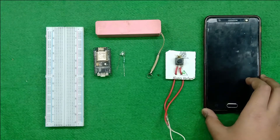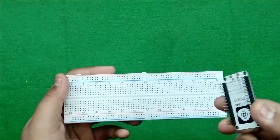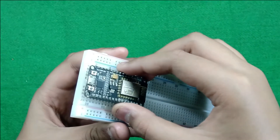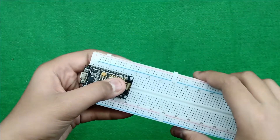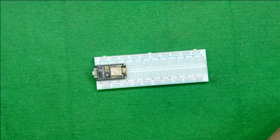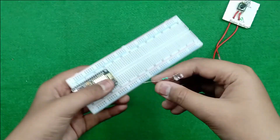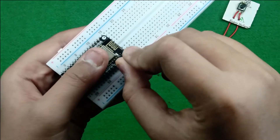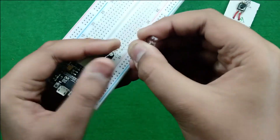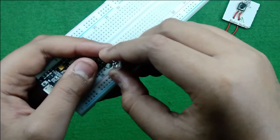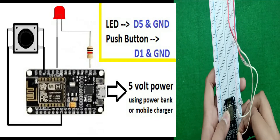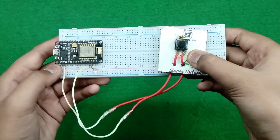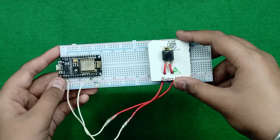Now let's start the project. First of all, let's make the hardware. The NodeMCU is placed in the breadboard to get wiring easily. Now according to my code, this LED is connected to the D1 output, which is the GPIO4 pin.